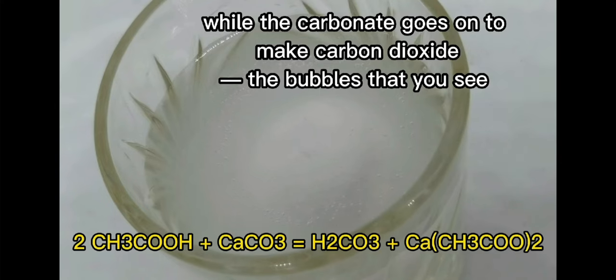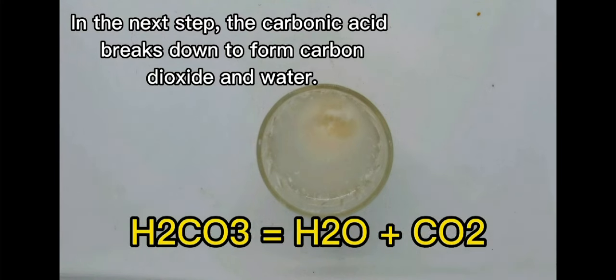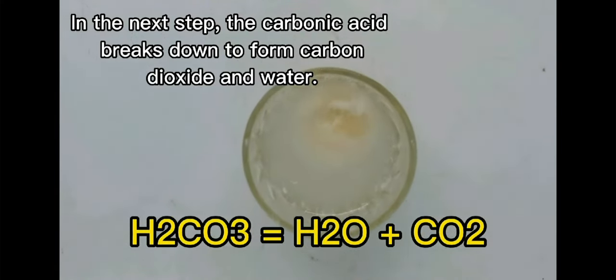While the carbonate goes on to make carbon dioxide, that is, the bubbles that you see. Along with this, the calcium and acetate form calcium acetate. In the next step, the carbonic acid breaks down to form carbon dioxide and water.